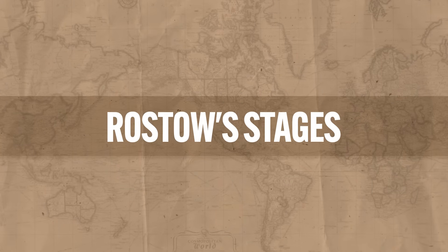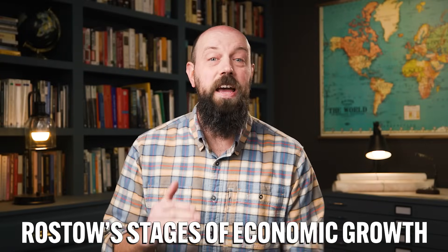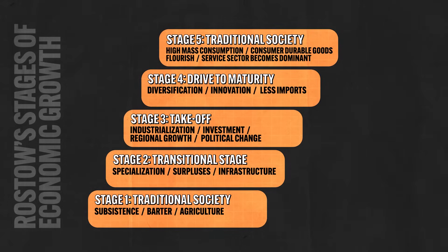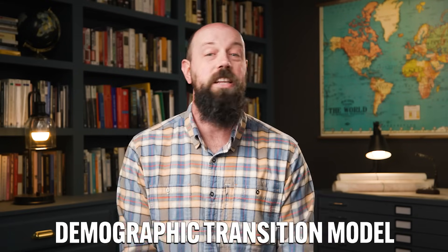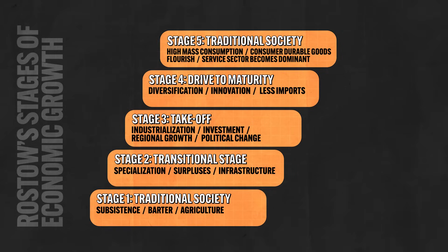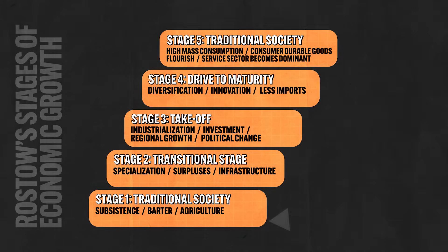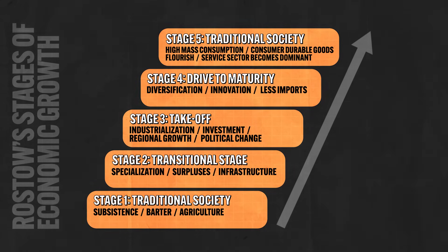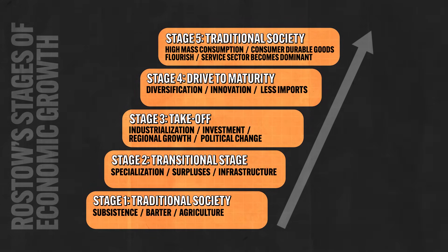The first theory that seeks to describe the spatial variation in development is known as Rostow's Stages of Economic Growth, developed by Walter Rostow. Essentially, Rostow's solution to the mystery of variations in development was to claim that every country will ultimately pass through five distinct stages of development. Rostow's stages roughly correspond to the stages in the demographic transition model. Rostow argued that every country starts at stage 1, characterized by agriculture, and then over time will inevitably arrive at stage 5, characterized by mass consumption and the overwhelming presence of tertiary sector jobs. Therefore, what explains the spatial distribution of development is that countries are merely at different parts of the model.